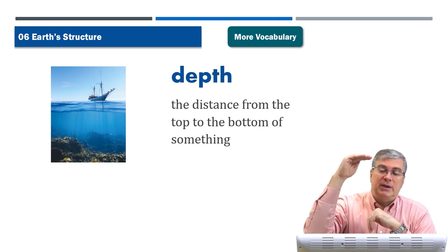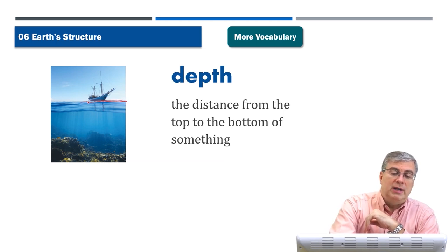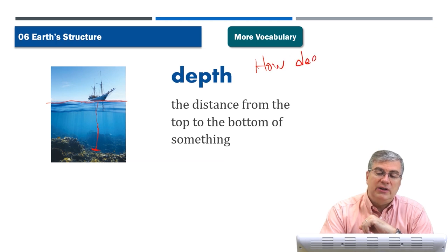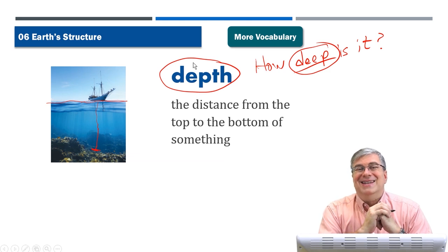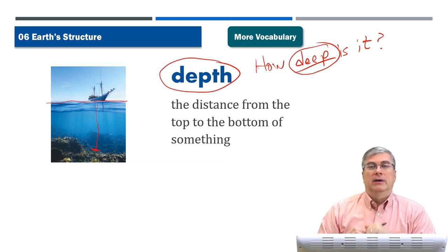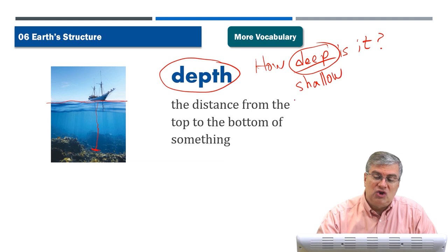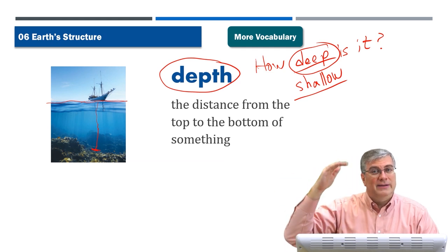'Depth' is the distance from the top to the bottom of something. Think about the ocean — the surface is at the top, and the depth is the distance from the surface down to the bottom. We can also ask 'how deep is it?' — 'deep' is the adjective form, and 'depth' is the noun. In a swimming pool, the shallow end means you can stand up, but in the deep end you cannot, because the depth is more than your height. The opposite of deep is shallow.